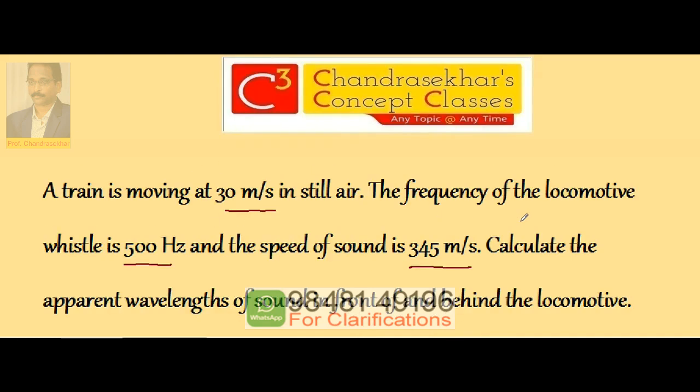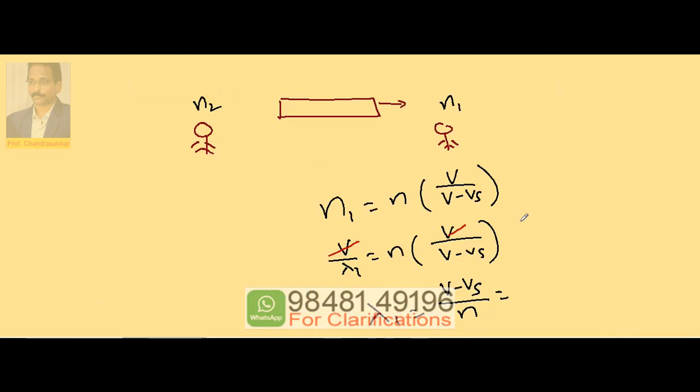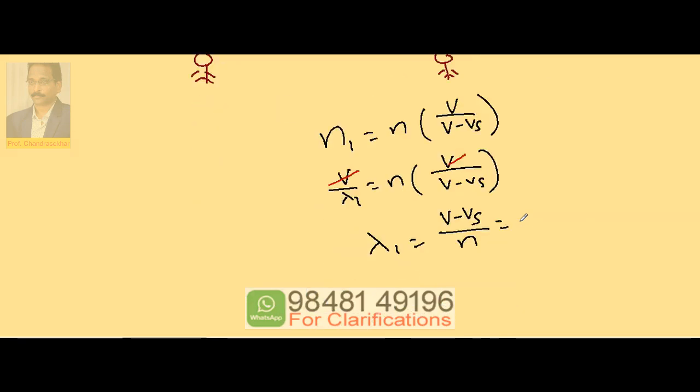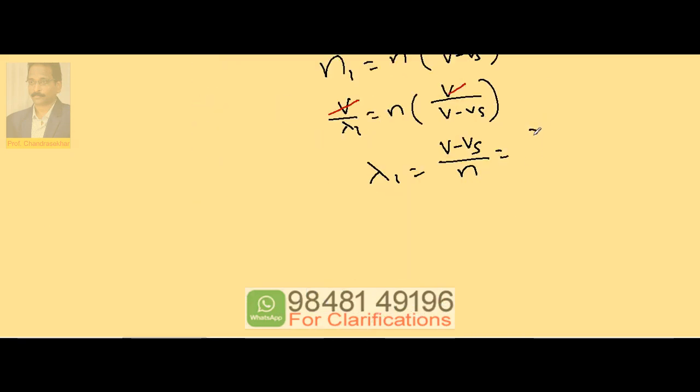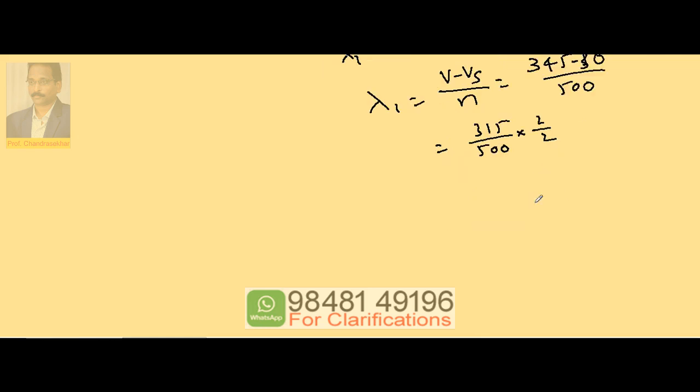Here V is given as 345 and Vs as 30, so 345 minus 30 divided by 500. So it is 315 by 500. Multiply denominator and numerator with 2, so this becomes 630 divided by 1000 meters.